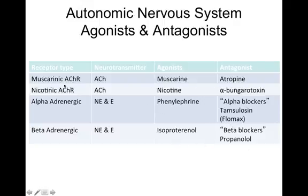For muscarinic receptors, their agonist is something called muscarin — derived from the fly agaric mushroom — which increases activity at muscarinic receptors. So what nervous system are muscarinic receptors associated with? Parasympathetic mostly, but sometimes sympathetic too, so technically both.